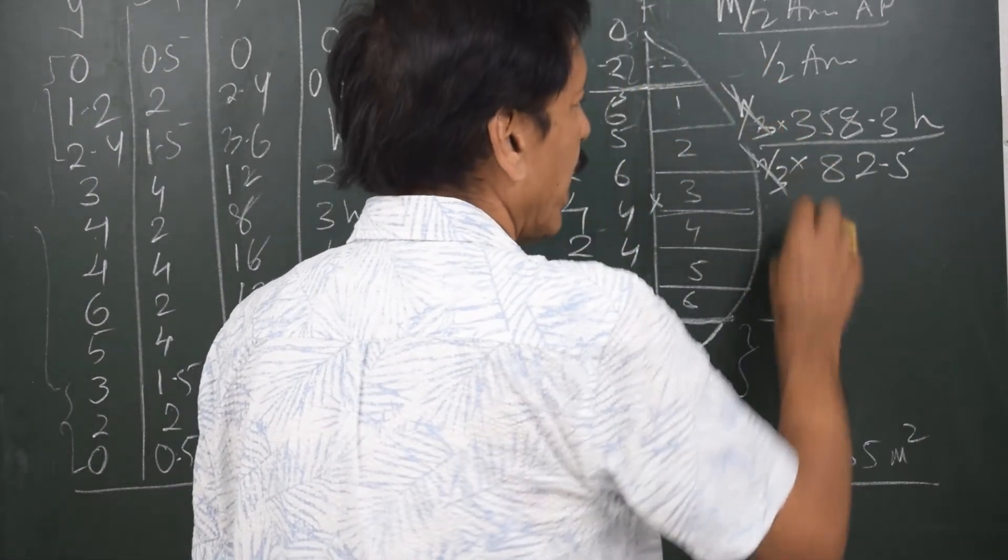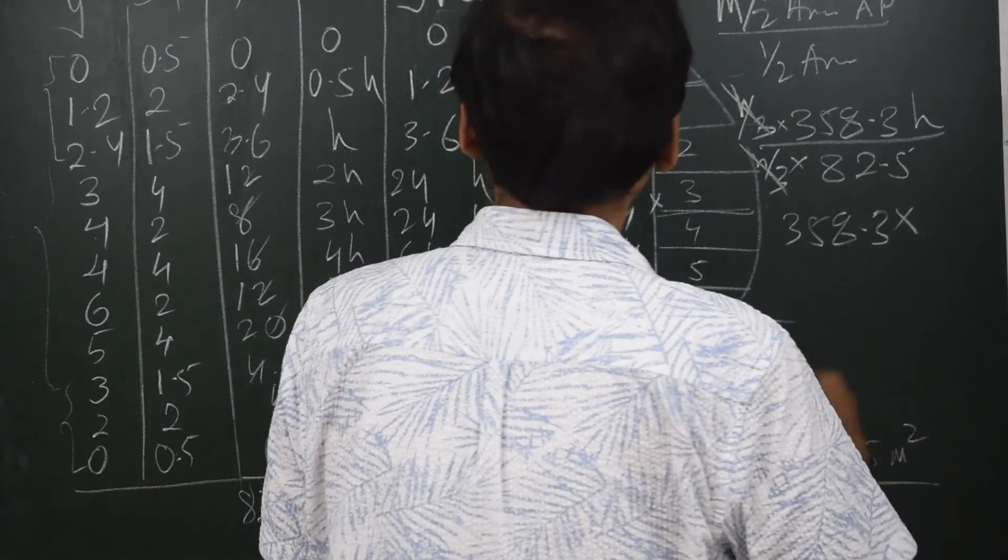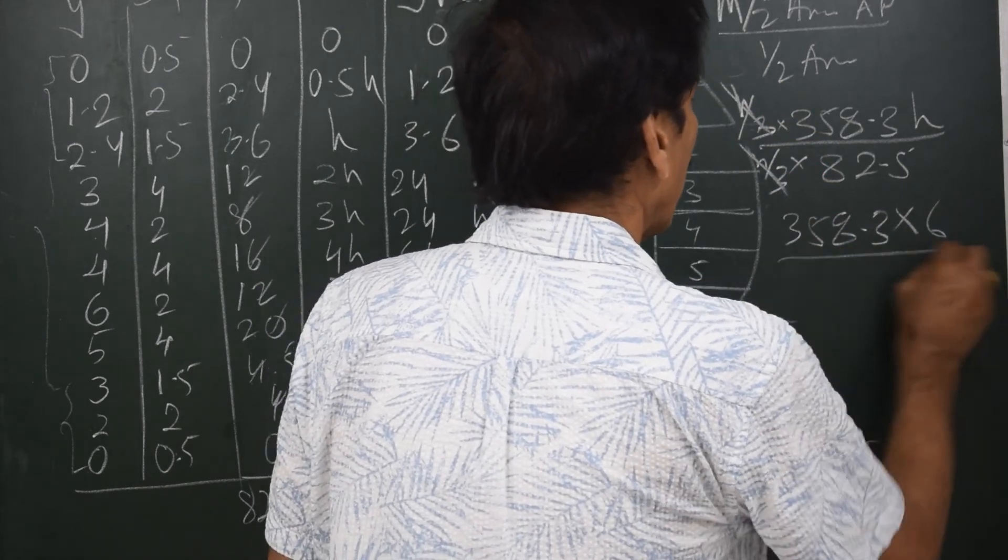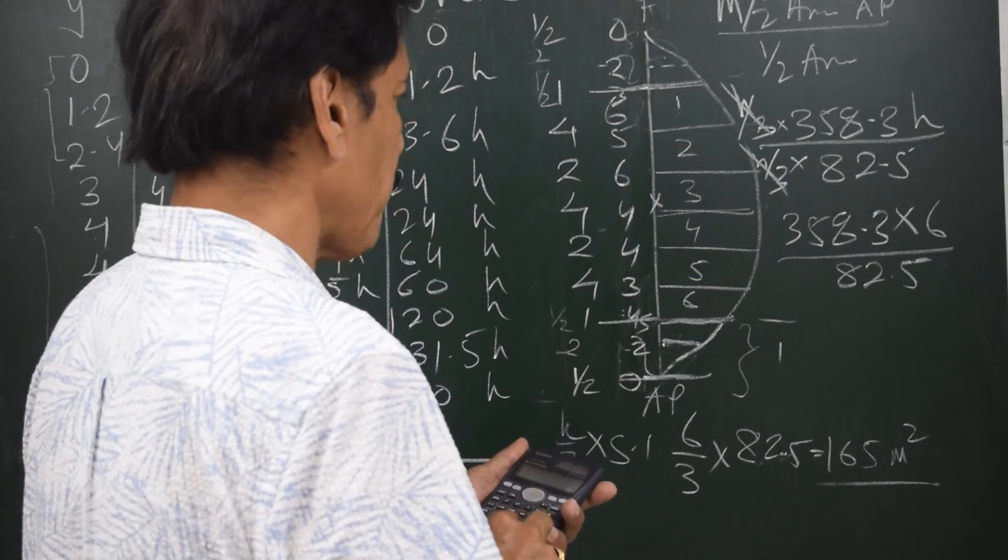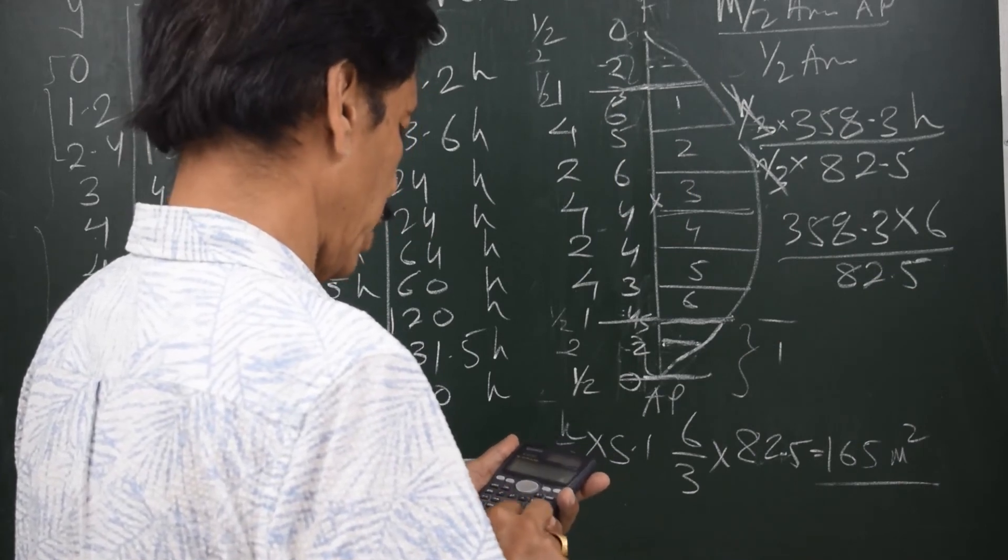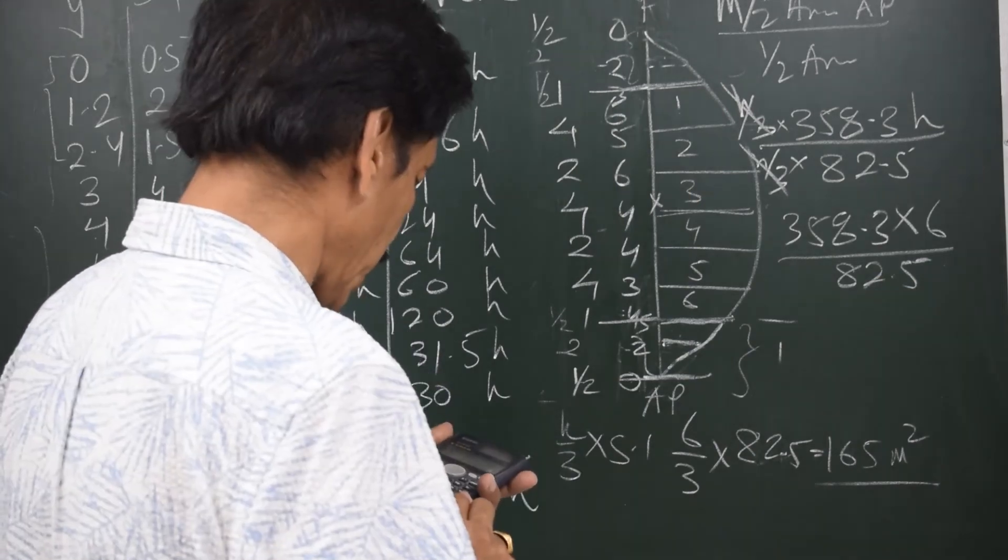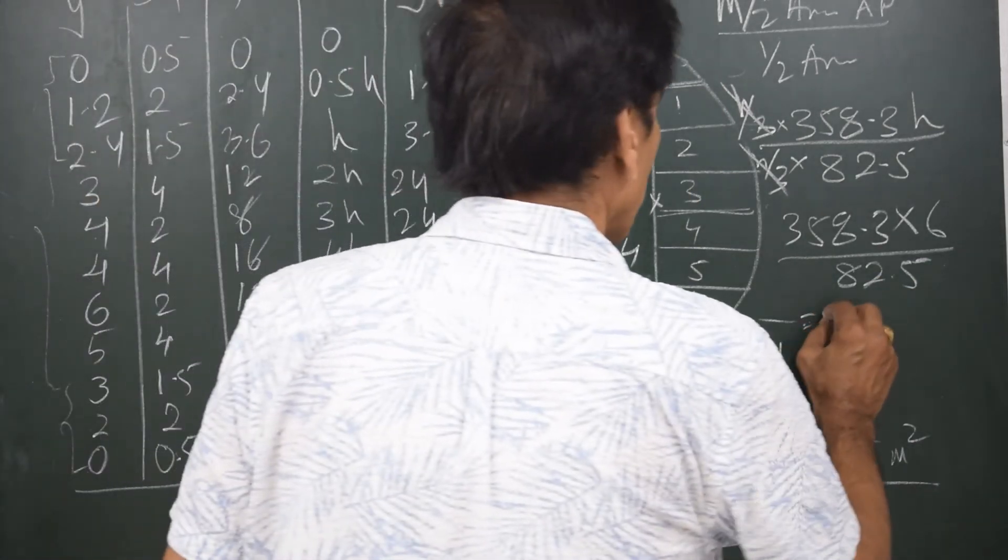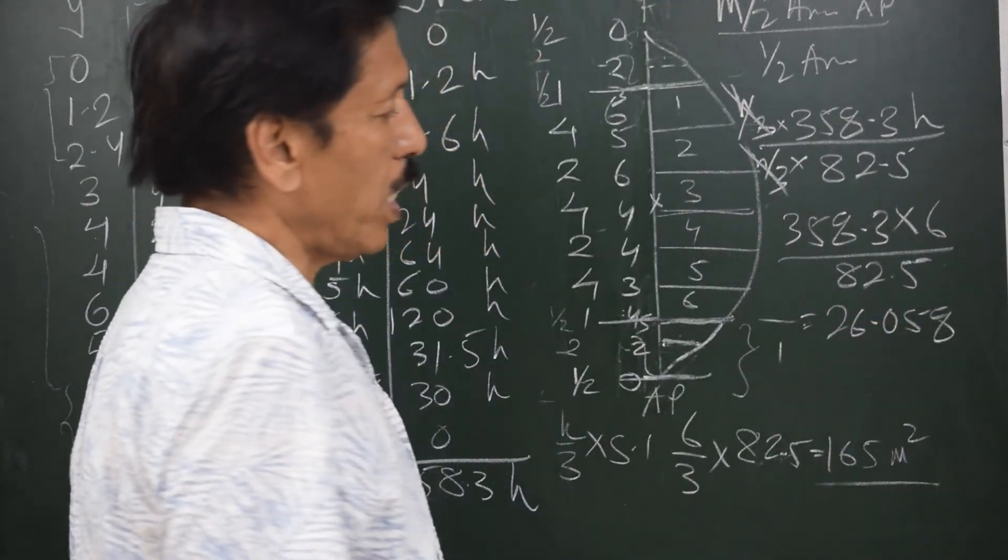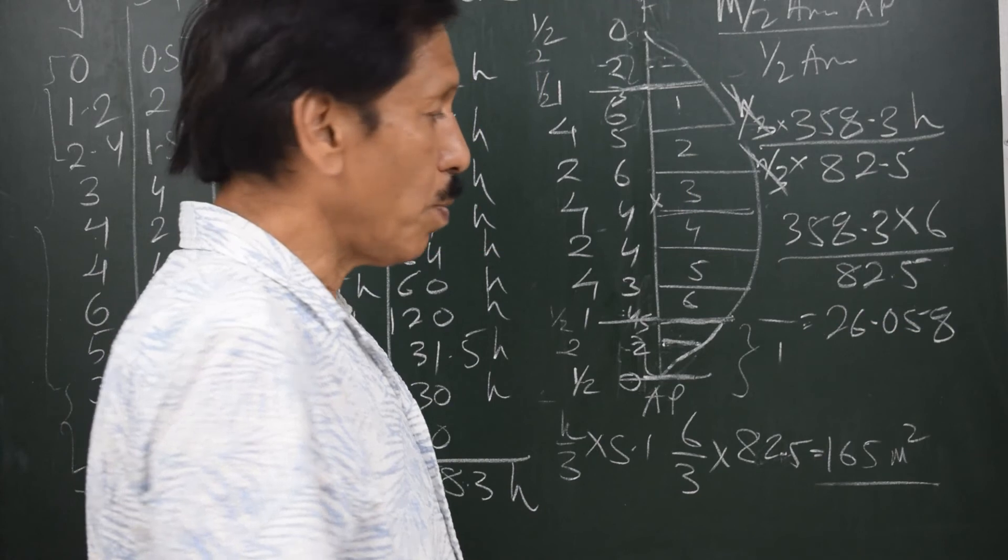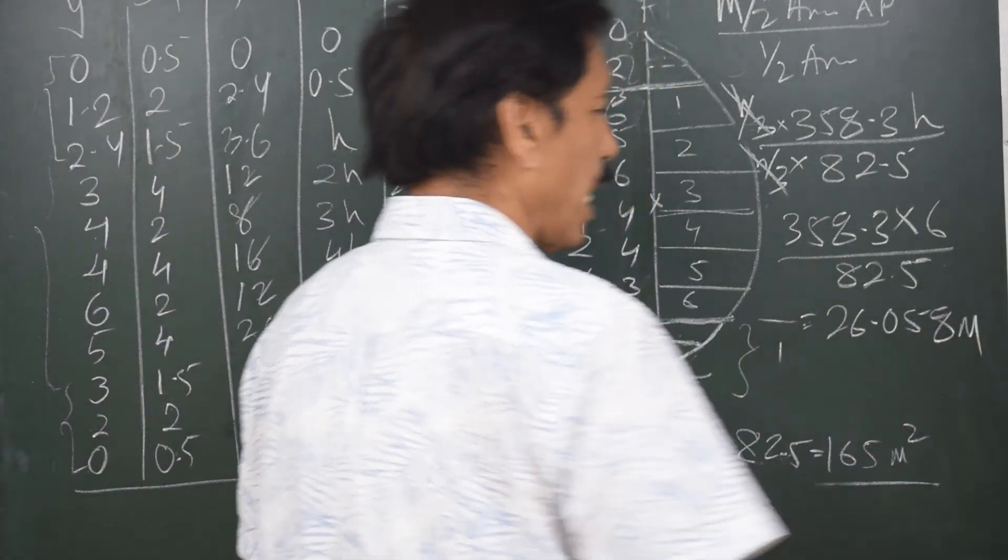So it becomes 358.3 into H, that is 6, divided by 82.5, which equals 26.058, that is 26.05 meters. So total length is 48 and 26 which is approximately halfway through. So 26.058 meter is the LCF.